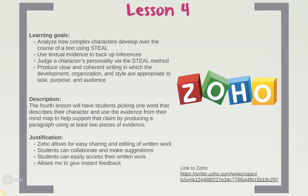Lesson four. Learning goals for lesson four are: analyze how complex characters develop over the course of a text using STEAL, use textual evidence to back up inferences, judge a character's personality via the STEAL method, and produce clear and coherent writing in which the development, organization, and style are appropriate to task, purpose, and audience. The fourth lesson will have students picking one word that describes their character and using the evidence from their mind map to support that claim by producing a paragraph using at least two pieces of evidence. I will have an example paragraph to show and go over with students from 'The Contents of the Dead Man's Pocket.' Students will write their paragraphs on Zoho, share their paragraph with two other students to edit, and then share it with me for feedback.